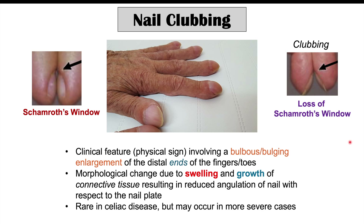Nail clubbing is also rare in celiac disease, but it is listed as something that can occur, potentially in more severe or longer-term untreated cases. With these nail findings, going on a gluten-free diet can allow some of them to completely resolve. Findings noted to resolve with a gluten-free diet include leukonychia, the white spots on the nails, as well as improvements in koilonychia and brittle nail syndrome as nutrient deficiencies are addressed.